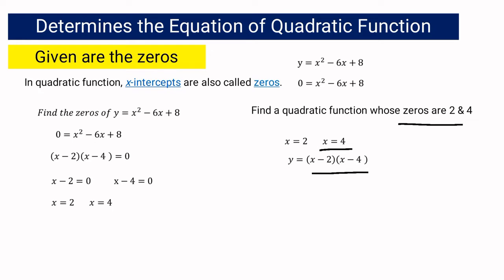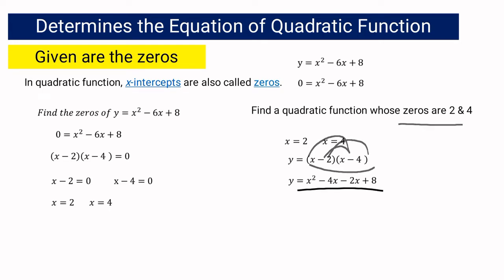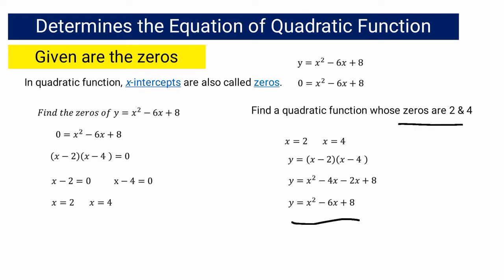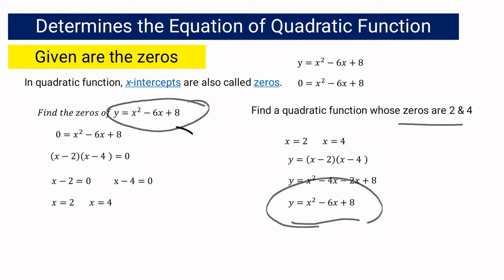After expressing it as factors, you are going to multiply using the FOIL method. We have x times x, that's x squared; x times negative 4 is negative 4x; negative 2 times x is negative 2x; and negative 2 times negative 4 is positive 8. Combining similar terms gives us y equals x squared minus 6x plus 8.